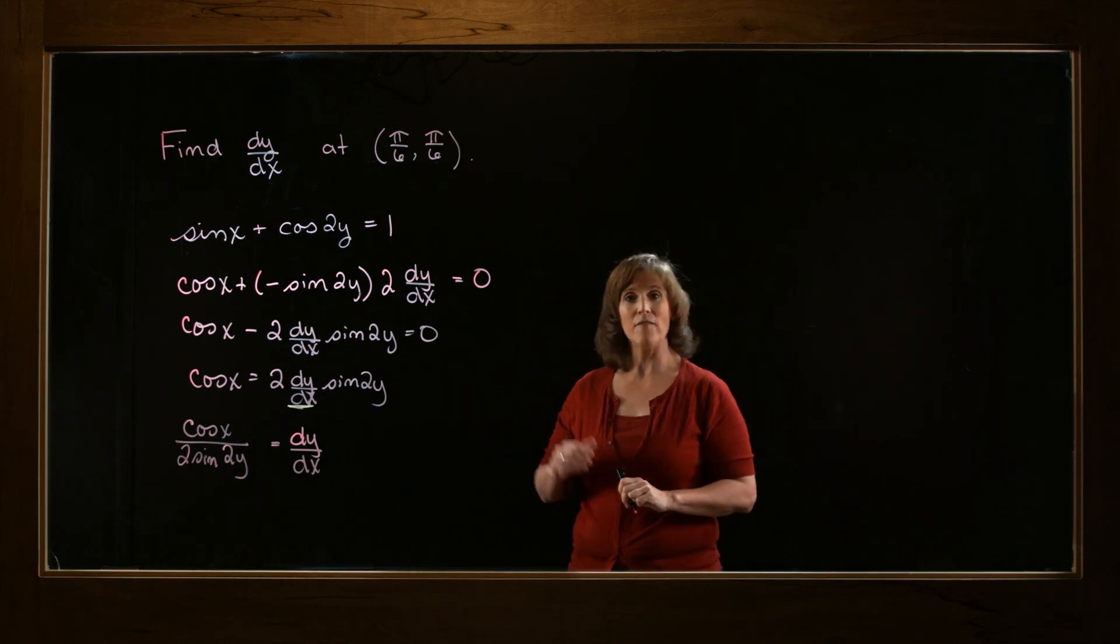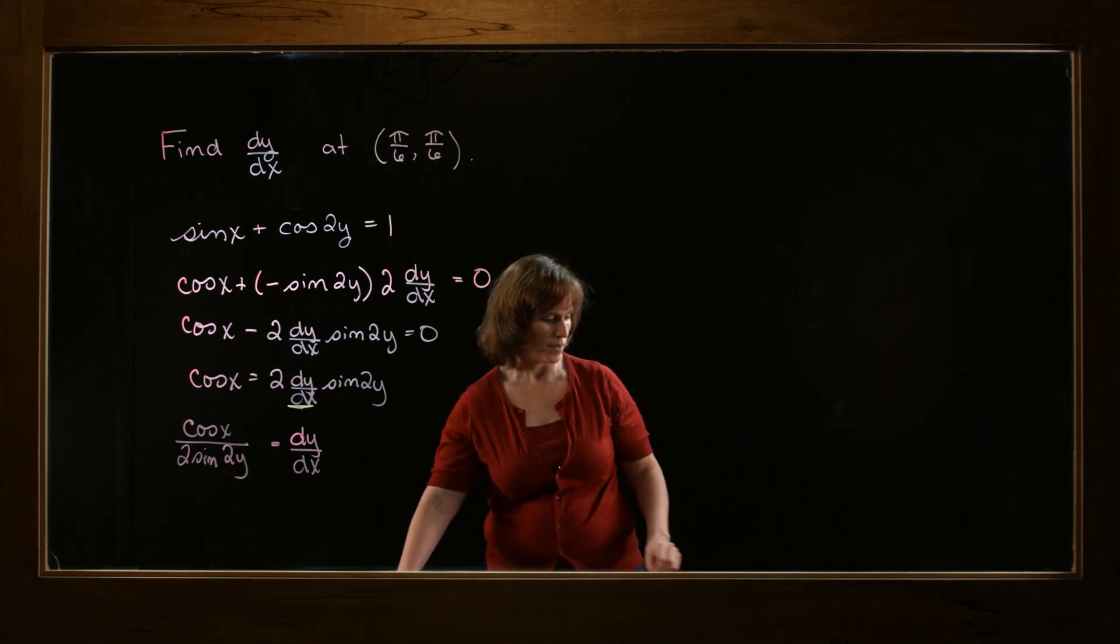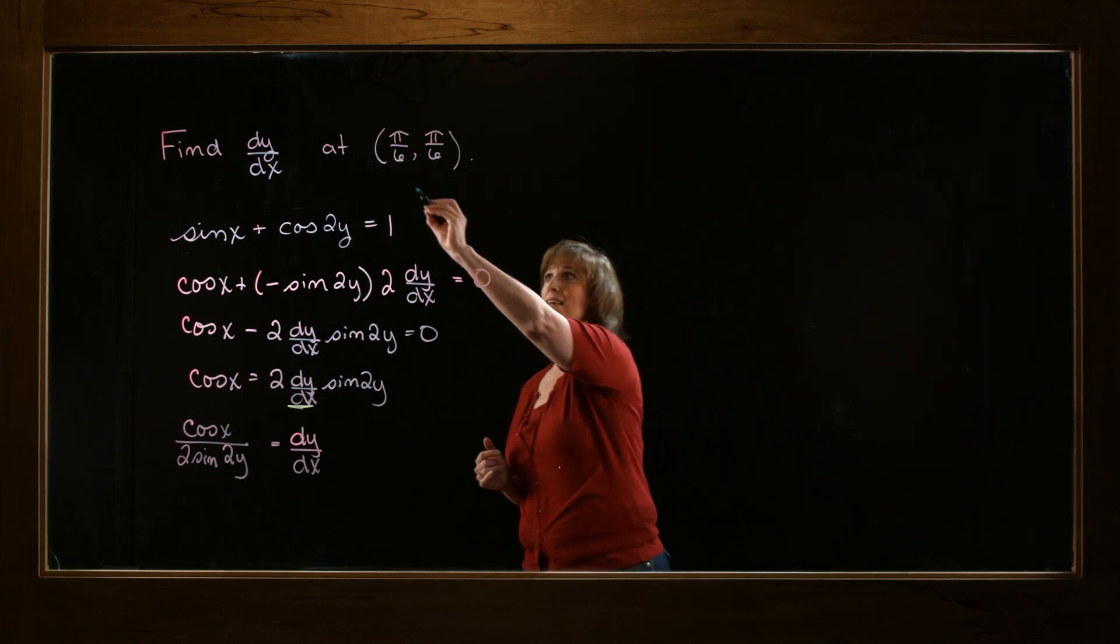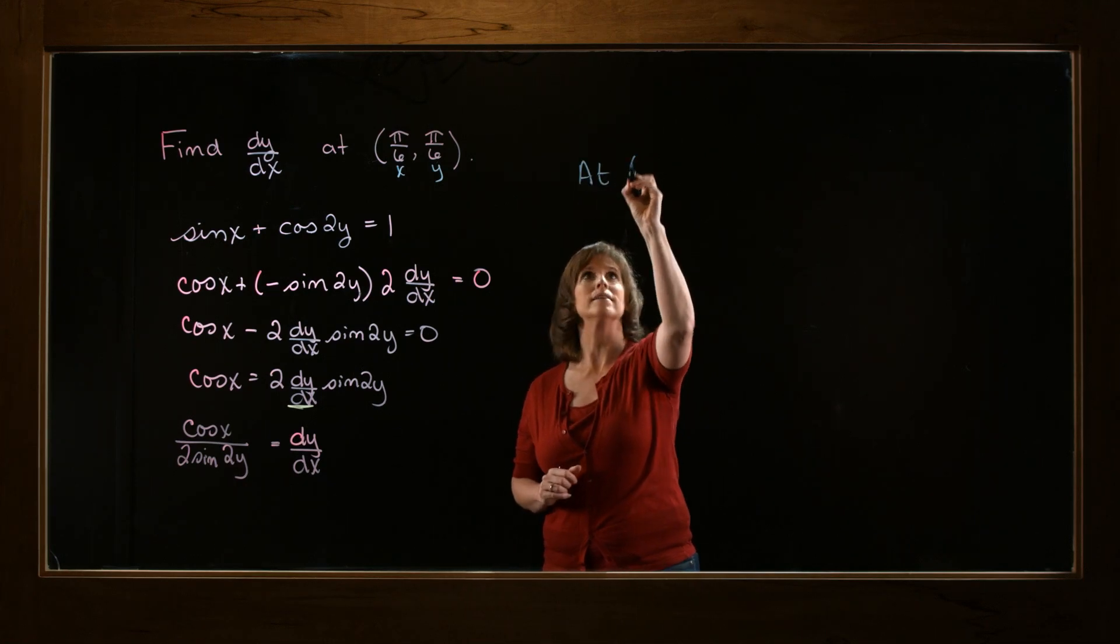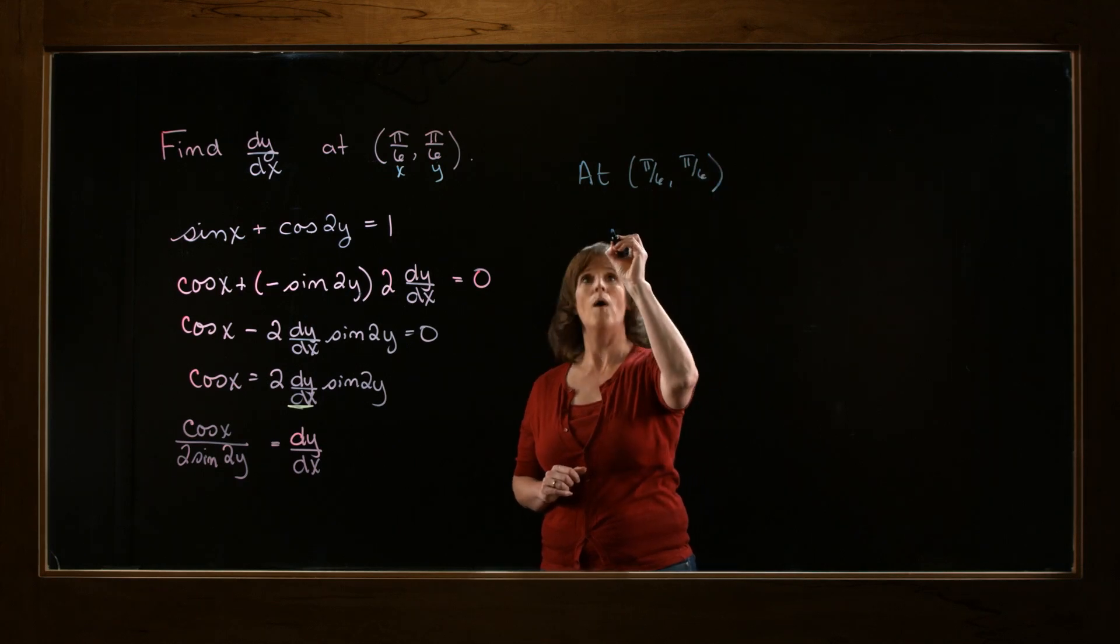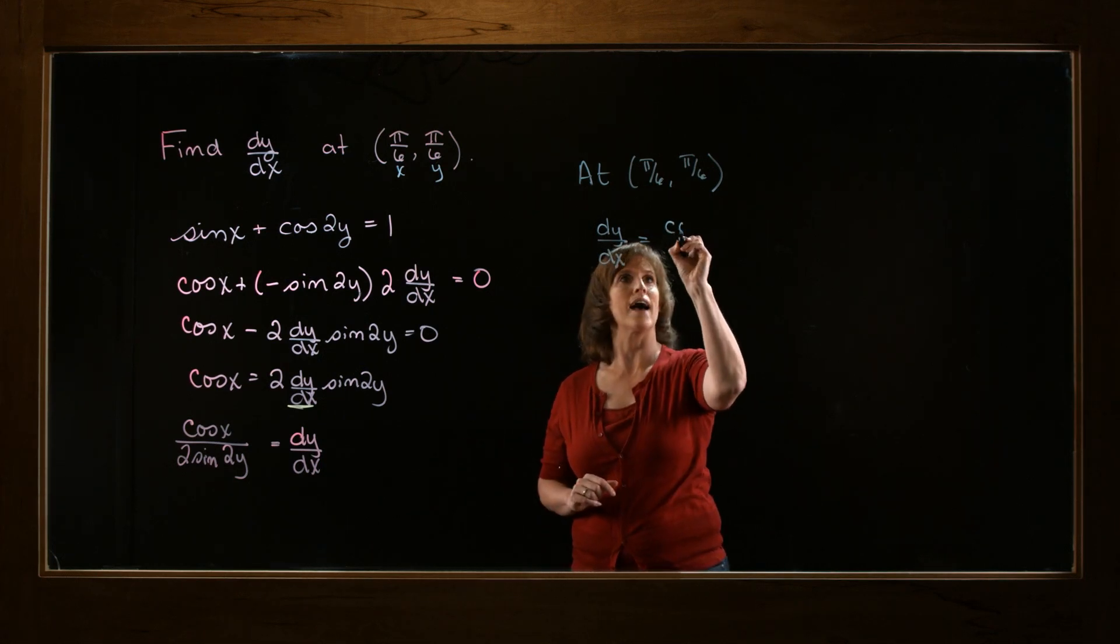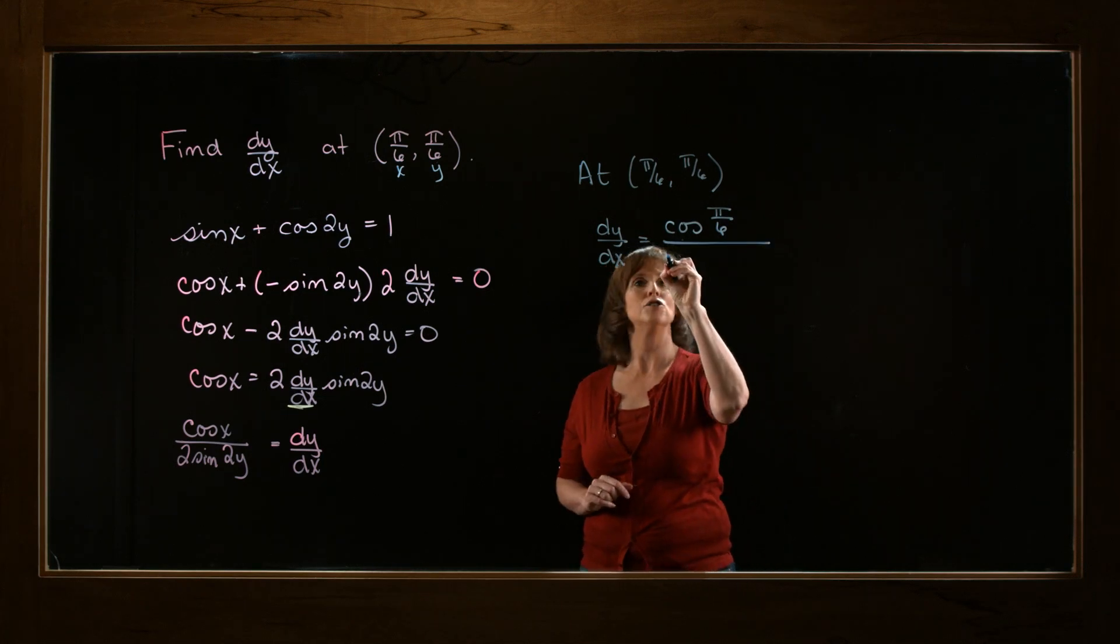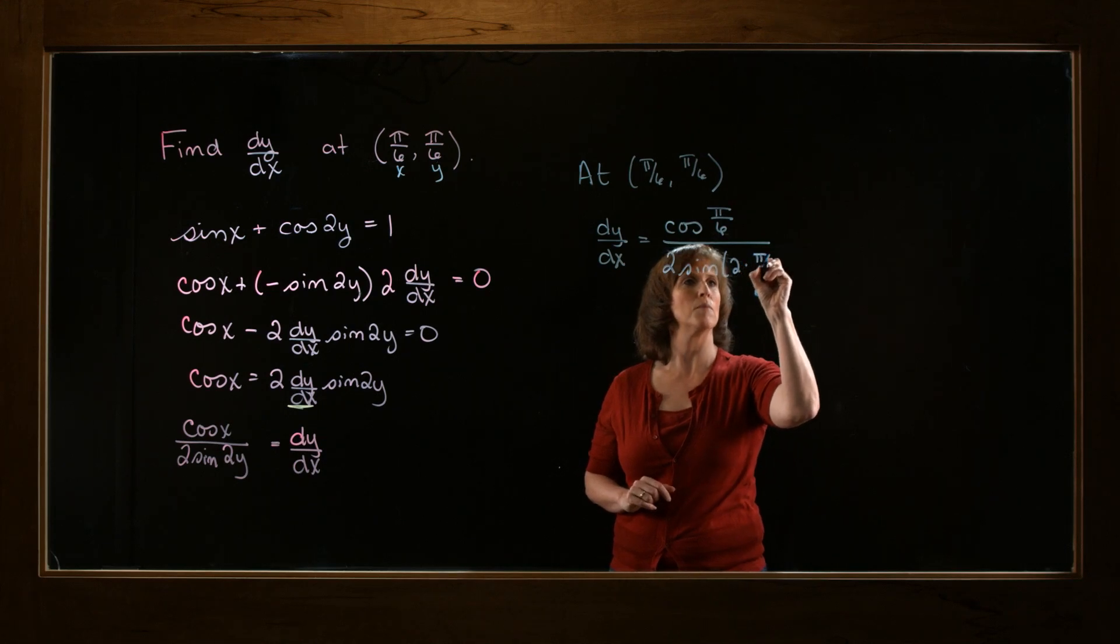All right. So I have my derivative. I'd like to find out what that value is at the point (π/6, π/6). So what I need to do is plug in π/6 for x and π/6 for y. So we'll say at the point (π/6, π/6), dy/dx is going to equal the cosine of π/6 divided by 2 times the sine of 2 times π/6.